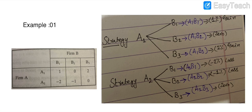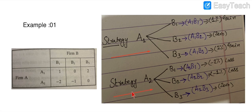Now looking at strategy A2: if Firm A plays A2, Firm B can again play B1, B2, or B3. The results are: A2-B1 gives minus two percent loss; A2-B2 gives minus one percent loss; and A2-B3 gives zero — meaning the firm neither gains nor loses.